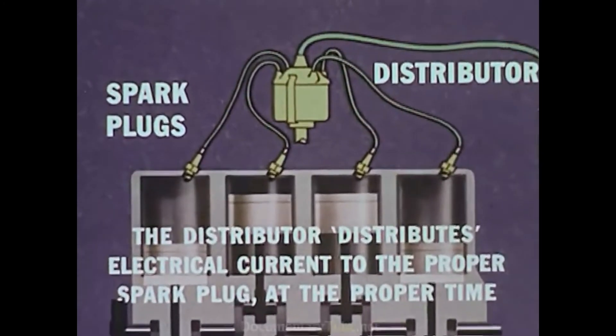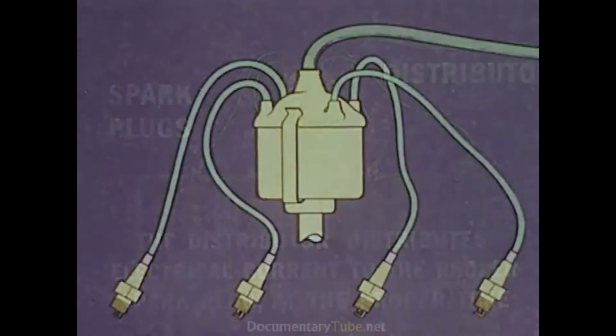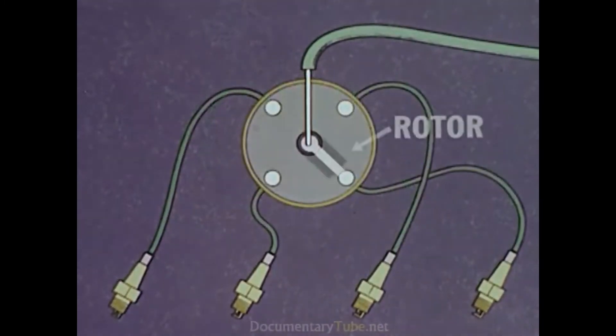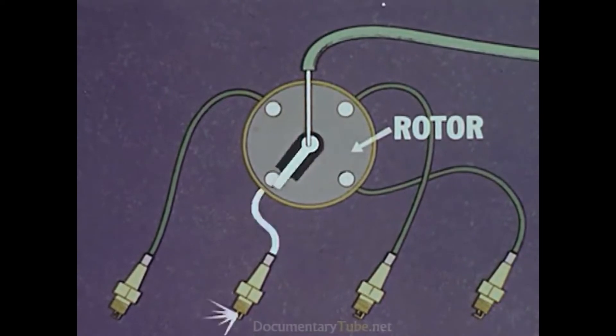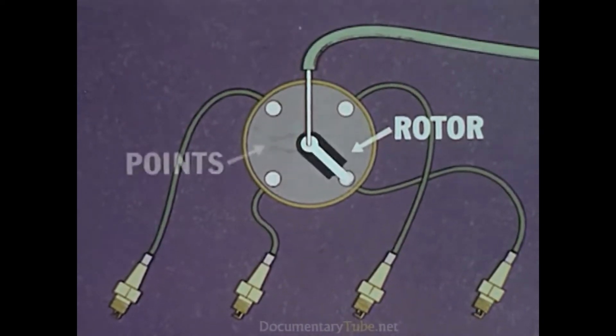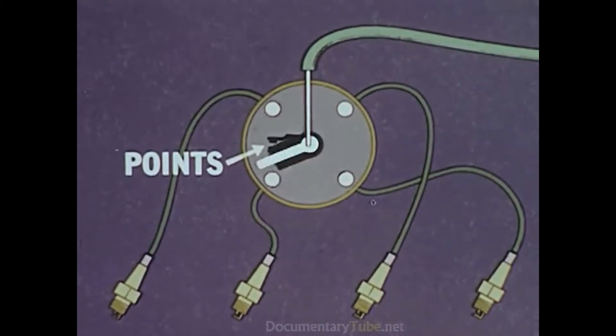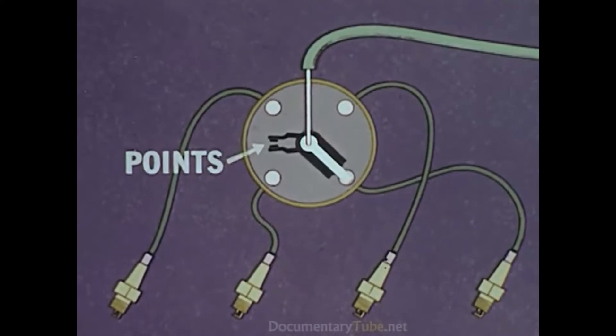The distributor distributes electrical current to the proper spark plug at the proper time. Inside the distributor is a rotor, which as it turns touches a series of contacts, one of which is wired to each spark plug. The points open and close as the rotor turns, interrupting the current to produce the fuel igniting spark.